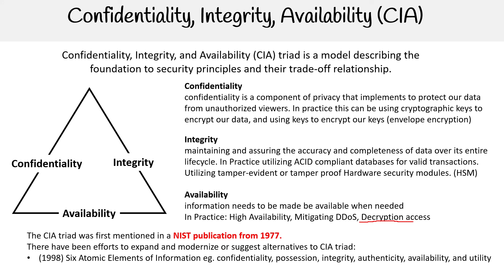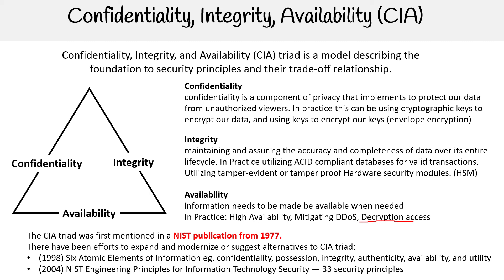So one was in 1998, where we have the six atomic elements of information: confidentiality, possession, integrity, authentication, availability, and utility. And then in 2004, we have NIST engineering principles for information technology security, which has 33 security principles.